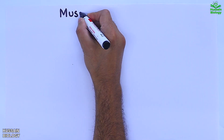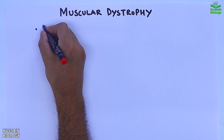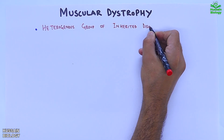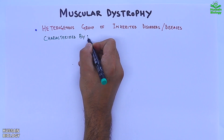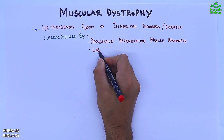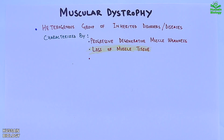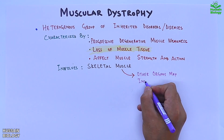In this video we will be discussing muscular dystrophy. Muscular dystrophy includes a heterogeneous group of inherited disorders characterized by progressive degenerative muscle weakness and loss of muscle tissue, which ultimately affects muscle strength and action. This muscular dystrophy primarily involves skeletal muscle, and then a few other organs may also get affected.